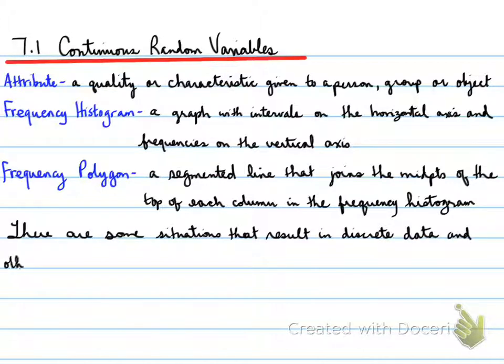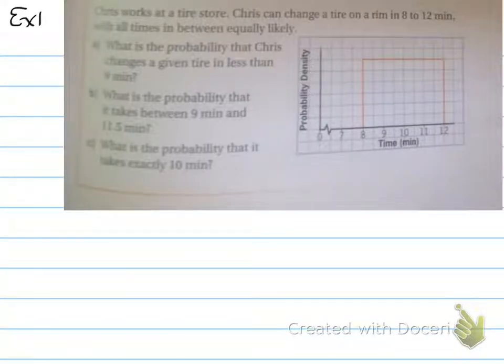These are some situations that result in discrete data and others that result in continuous data over a range. Now let's look at the first example. Chris works at a tire store. Chris can change a tire on a rim in 8 to 12 minutes with all times in between equally likely. What is the probability that Chris changes a given tire in less than 9 minutes? What is the probability that it takes between 9 and 11.5 minutes? What is the probability that it takes exactly 10 minutes?